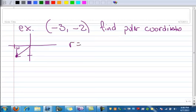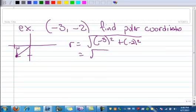And so, let's first find R. Well, R is going to be the square root of negative 3 squared plus negative 2 squared. So that's going to be 9 plus 4. And I'll work that over here. And 9 plus 4 is 13. So that's going to be the square root of 13.